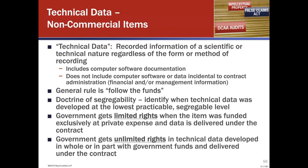An unlimited rights license, on the other hand, gives the government the right to use, disclose, reproduce, prepare derivative works, distribute copies to the public, perform publicly, display — in any manner, for any purpose — and have and permit others to do so. They can give that data to the public for any reason, including a commercial purpose. They could give it in response to a Freedom of Information Act request.